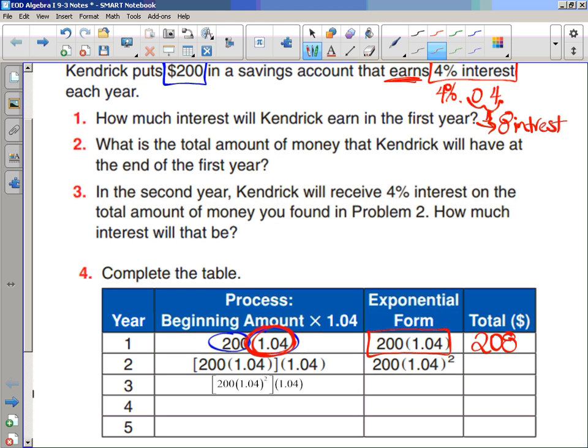And what is the total amount of money that Kendrick will have at the end of the first year? Well, that's the $208. And then in the second year, Kendrick will receive 4% interest on the total amount of money that we found in problem 2. So how much interest will that be? Well, again, we'll look at the table, but if I want to look at the next year, now we have $208, and then we're going to multiply by 1.04 again. So there's the 4%. He's earning interest, so that's why we add it to 1, and we get $216.32.